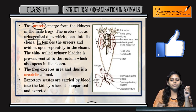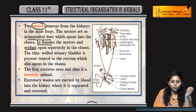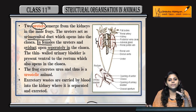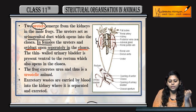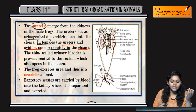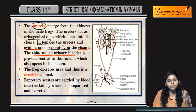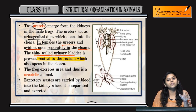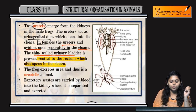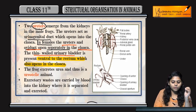And in females, ureters and oviduct jo hai, they open separately in the cloaca — ureter separately and oviduct separately. Thin-walled urinary bladder jo hai, that is present ventral to the rectum, which opens in the cloaca. Ventrally present hoota hai urinary bladder.